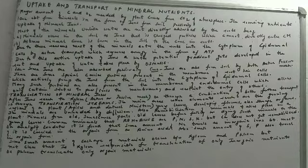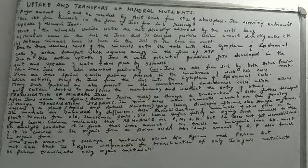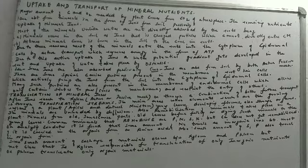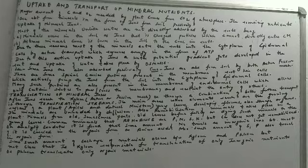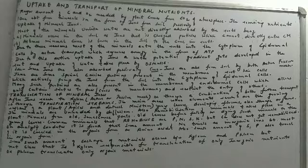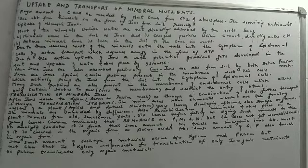Some ions are also absorbed passively — it is not that all ions are absorbed actively only. There are some ions which can easily enter the cell membrane. So the conclusion is: mainly, mineral ions are absorbed by active transport; however, it can also occur by passive mechanism; and at times there is a combination of both active and passive mechanisms.